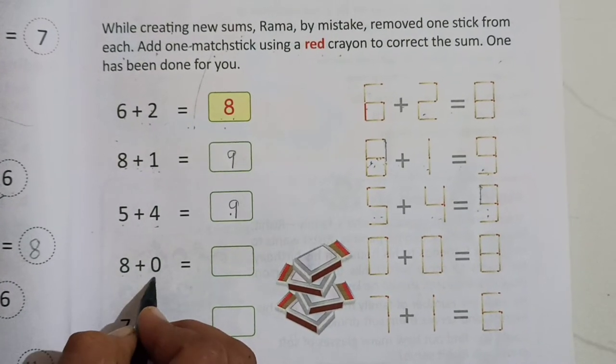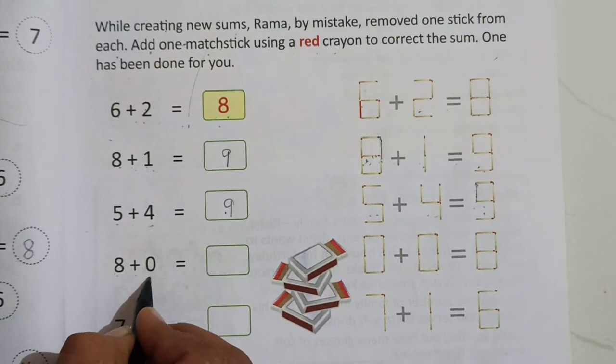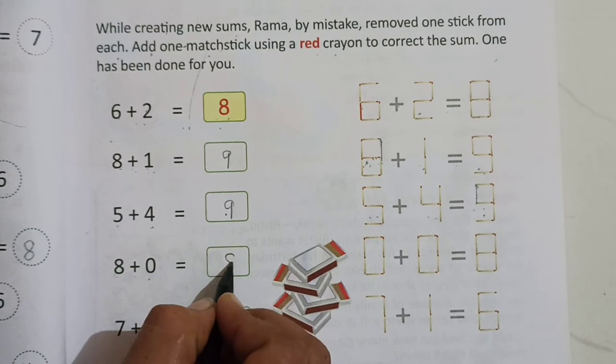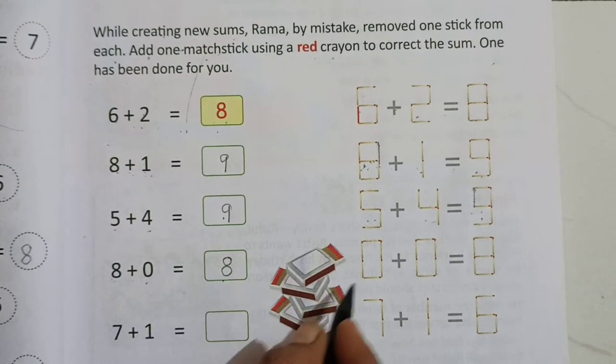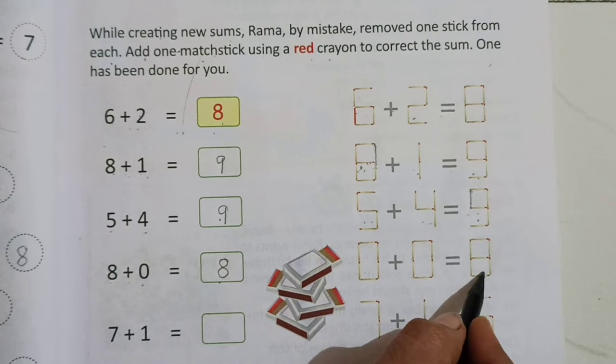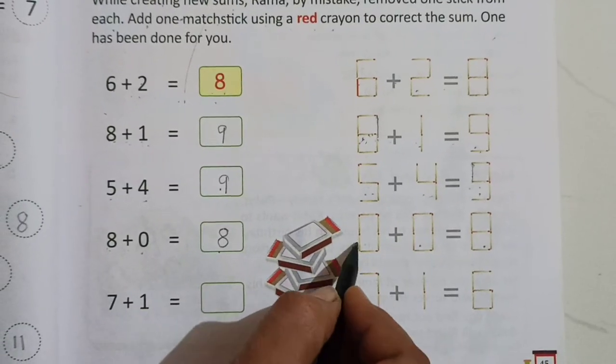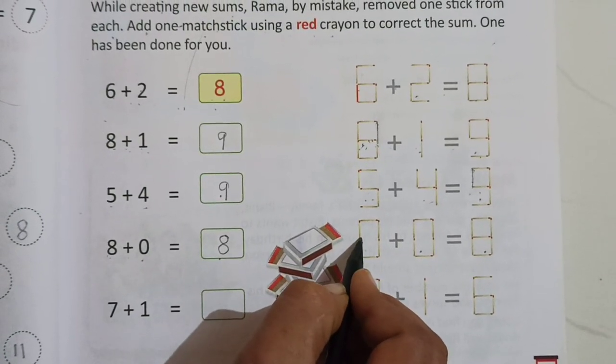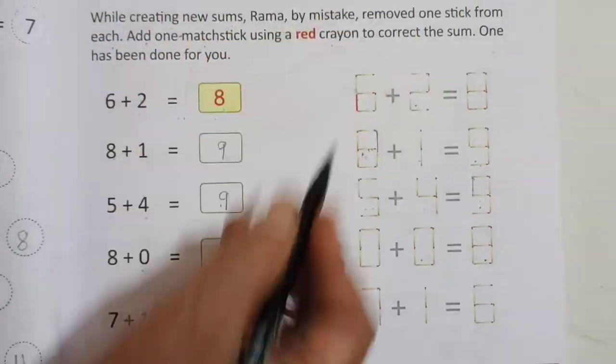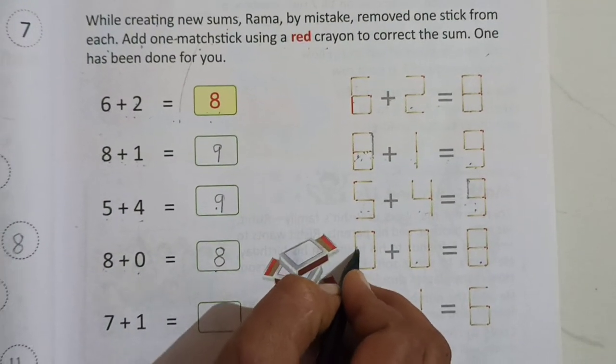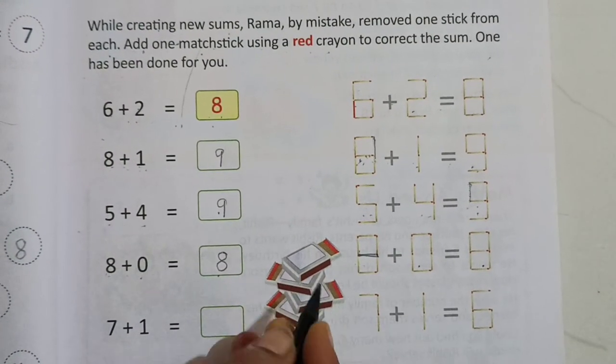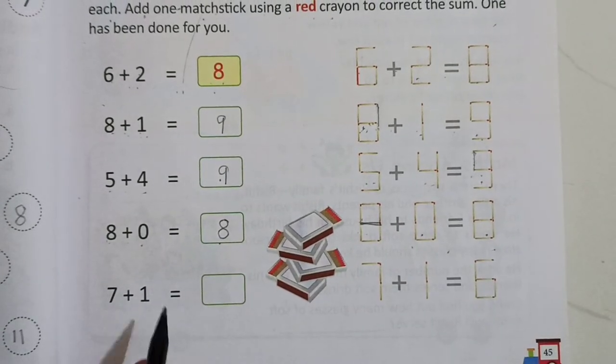Then 8 plus 0. Any number plus 0, we will get number itself, 8. Now here. Here is 8, here is 0. But we have to make here 8. And look, this 8 means we have to put here slipping line. So 8 plus 0 is equal to 8.